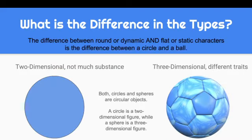The difference between round or dynamic and flat or static characters is like the difference between a circle and a ball. A circle is two-dimensional — there's not much substance there. A sphere is three-dimensional and has a lot of different traits. Both are circular objects, but a circle only shows you what it is, while a sphere has different traits as you turn it.